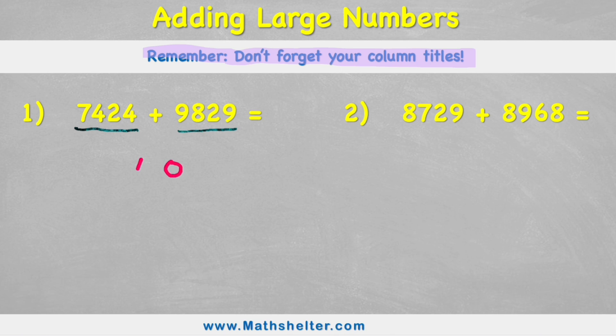We're going to need ones, tens, hundreds and thousands. And now I can simply put my numbers in the correct place. So 7,424 will be 7,424 and I'm adding that to 9,829.